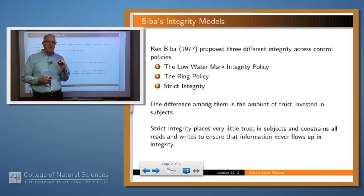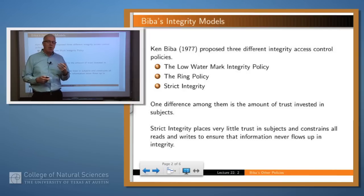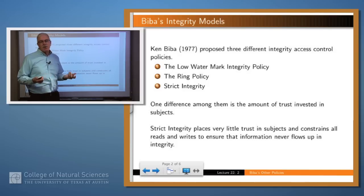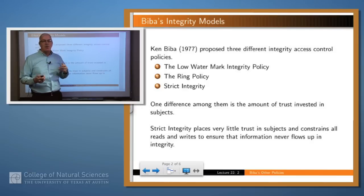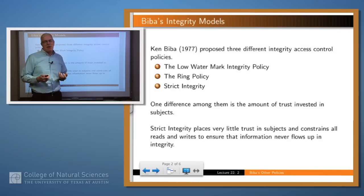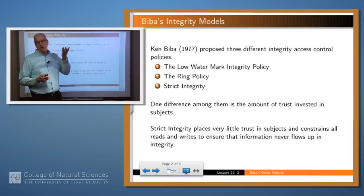The basic difference among these three policies is the amount of trust that you invest in a subject to be able to process the information that it takes in. Strict integrity places very little trust in the subject. You're precluded from writing up an integrity, and you're precluded from reading down an integrity, so you can't take in bad information and you can't propagate bad information up.